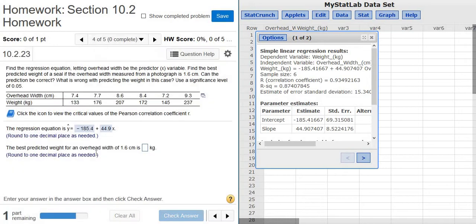Well done. The best predicted weight for an overhead width of 1.6 is... So it's asking us to predict the y-value when x is 1.6. So before we do that, we have to check to see if the correlation is significant.